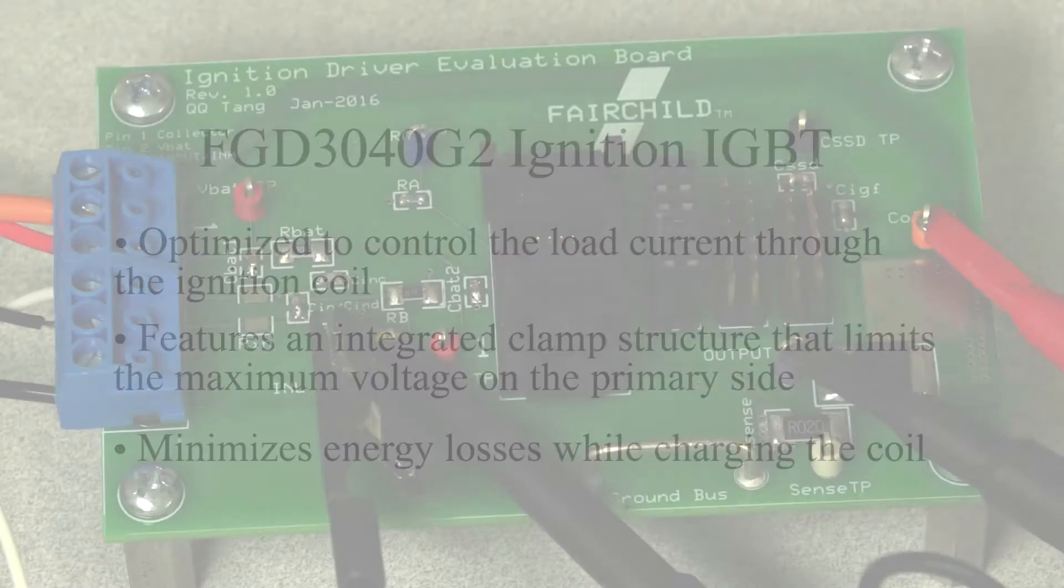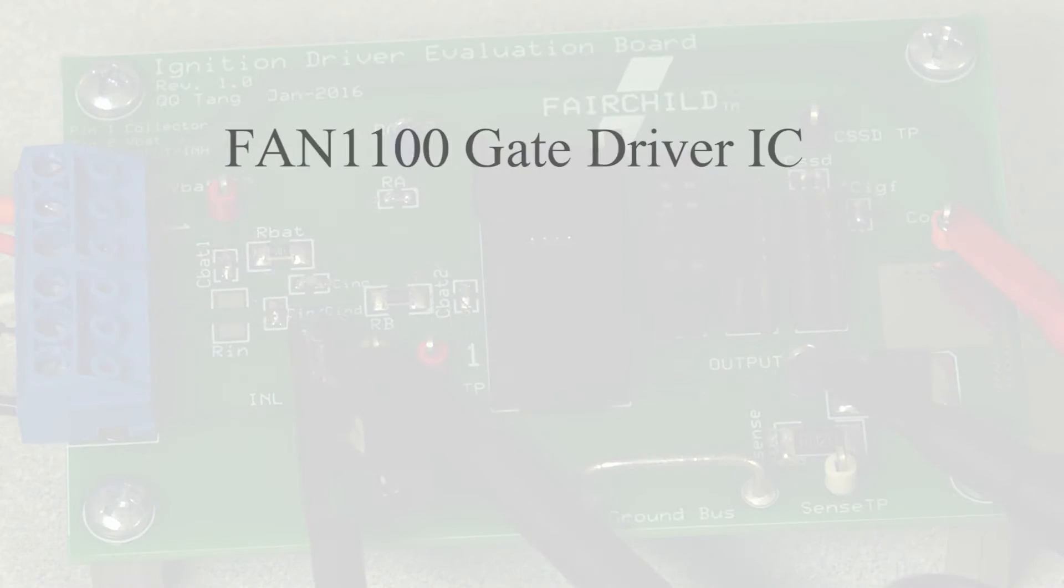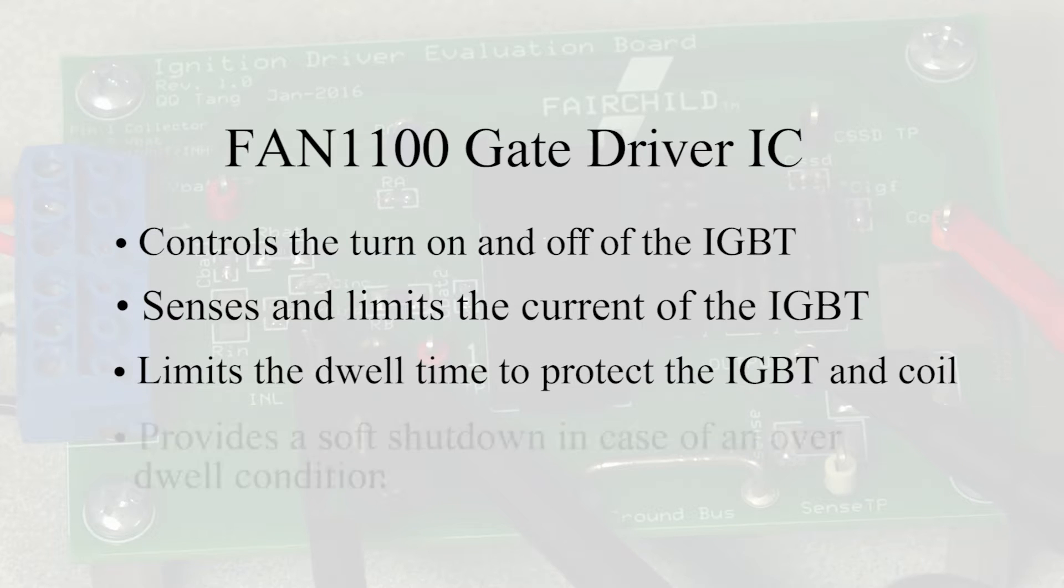The IGBT is driven by the FAN1100 IC. This IC controls the turn on and turn off of the IGBT, senses and limits the current of the IGBT, limits the dwell time to protect the IGBT and coil, and provides a soft shutdown in case of an overdwell condition.